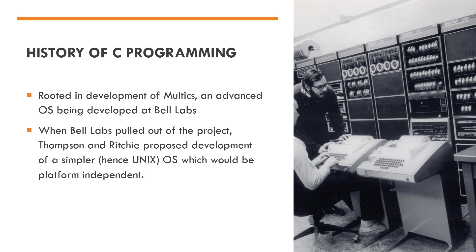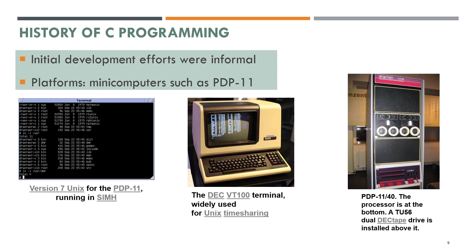When Bell Labs pulled out of the project, Thompson and Ritchie proposed development of a simpler, hence UNIX operating system, which would be platform independent. The initial development efforts were informal and the platforms were using mini computers such as PDP-11.